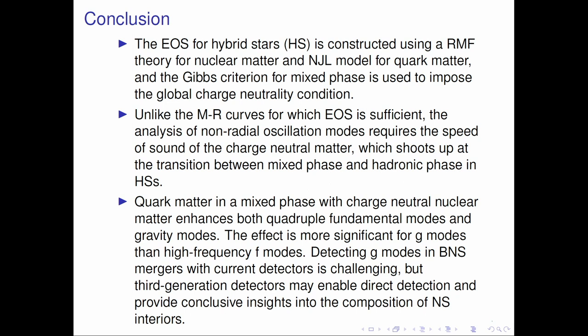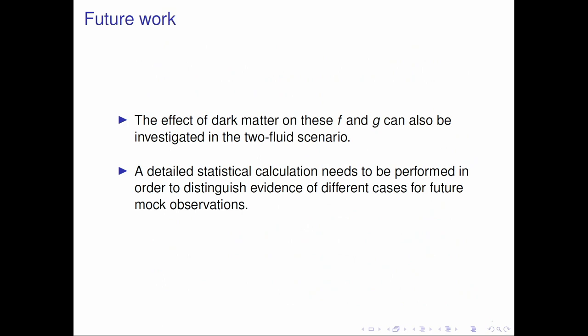Before I conclude, detecting G-modes in binary merger with current detectors is challenging. But third-generation detectors such as Einstein Telescope may be able to detect them in the future, because these modes are coupled to gravitational wave signals. In the future, one needs to study more rigorously how the presence of dark matter affects these mode frequencies. There could be a scenario where dark matter leaves some signatures in these non-radial mode oscillations. Thank you.